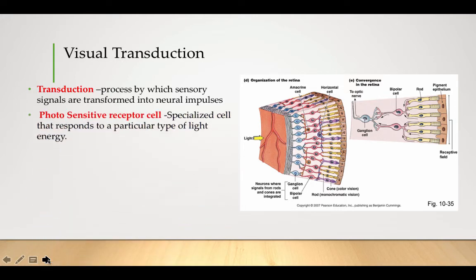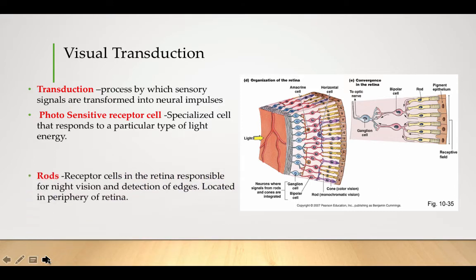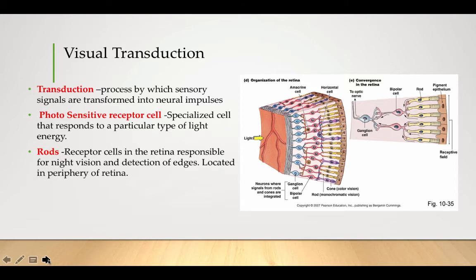Take a quick look here. Remember our photosensitive receptor cells are the only cells in our eye that respond to light energy. These are the rods. They're located in the periphery or at least outside of the fovea for night vision, detection of edges. There's about 120 million each eye and they're located again in the back of the retina.